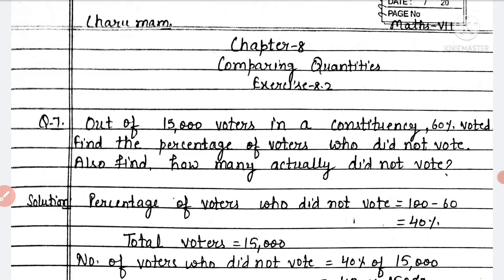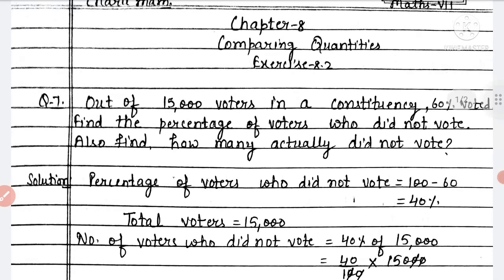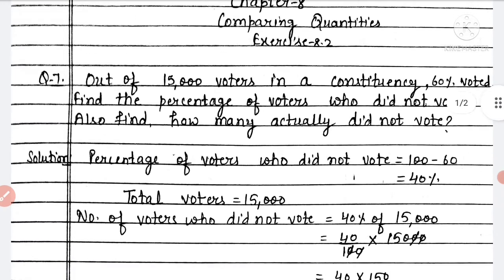Total voters 15,000 are given, out of which 60 percent voted. We need to find the percentage of voters who did not vote, and also how many actually did not vote — we need both the percentage and the numbers. So let's start the solution. Percentage of voters who did not vote: total is 100, those who voted are 60 percent, so 100 minus 60 gives 40 percent who did not vote.